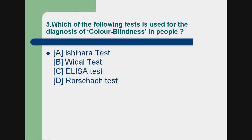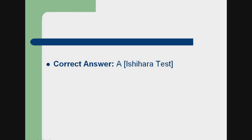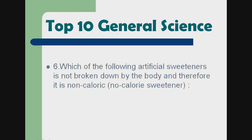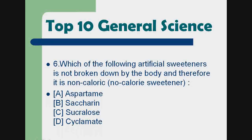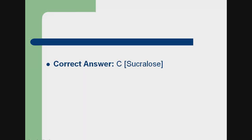Question 5: Which of the following tests is used for the diagnosis of color blindness in people? a) Ishihara test, b) Whitehall test, c) ELISA test, d) Rorschach test. Correct answer: a) Ishihara test. Question 6: Which of the following artificial sweeteners is not broken down by the body and therefore is a non-caloric sweetener?